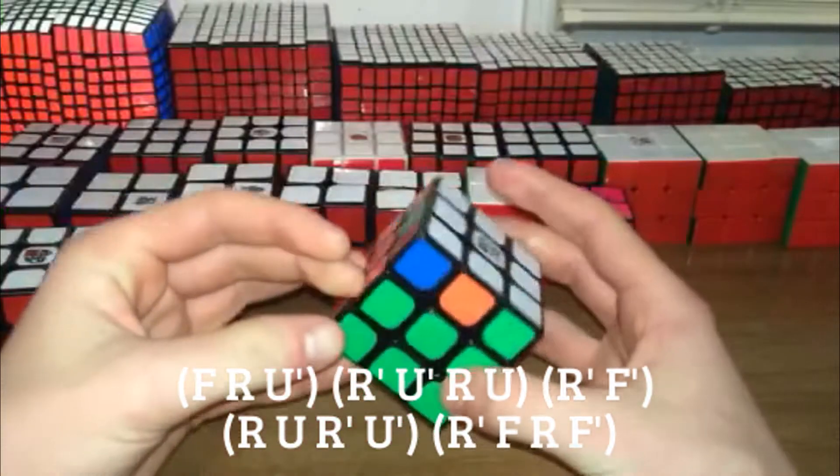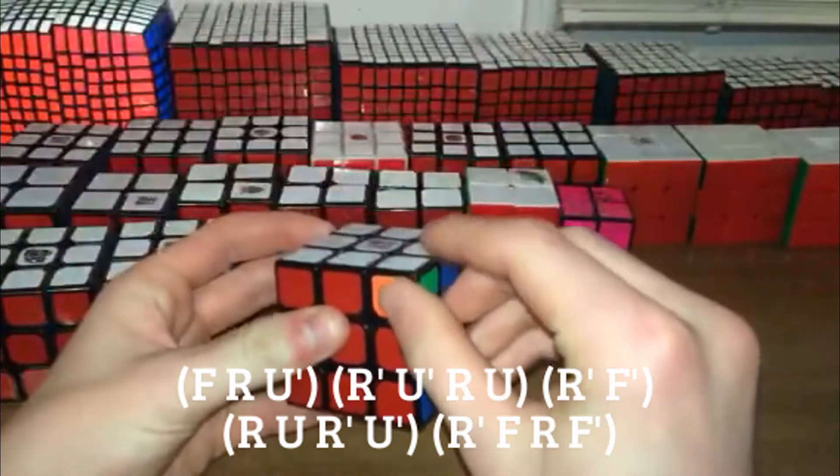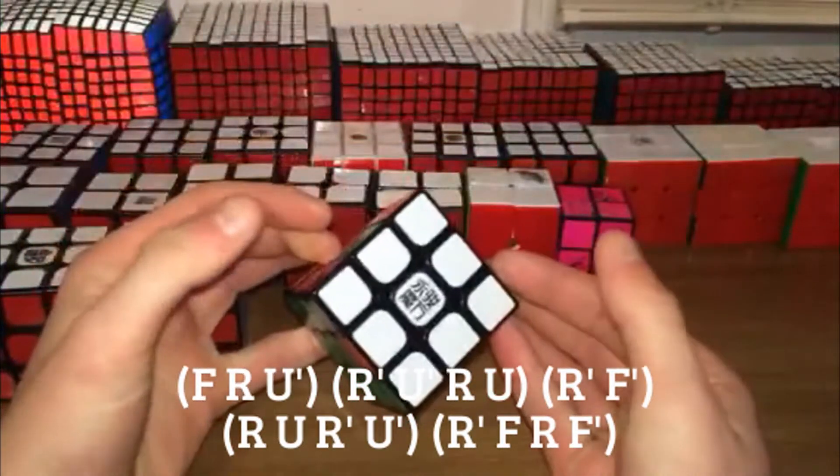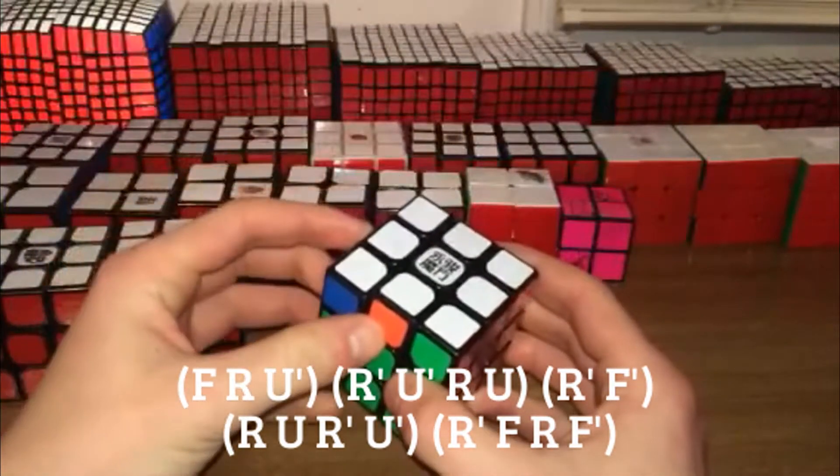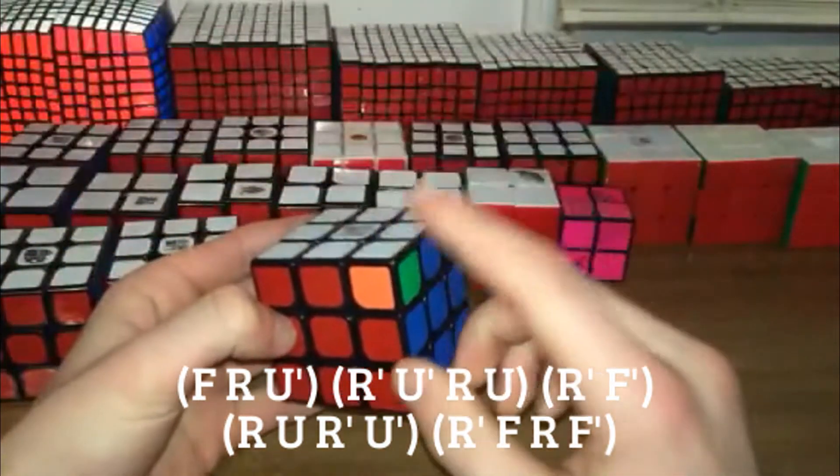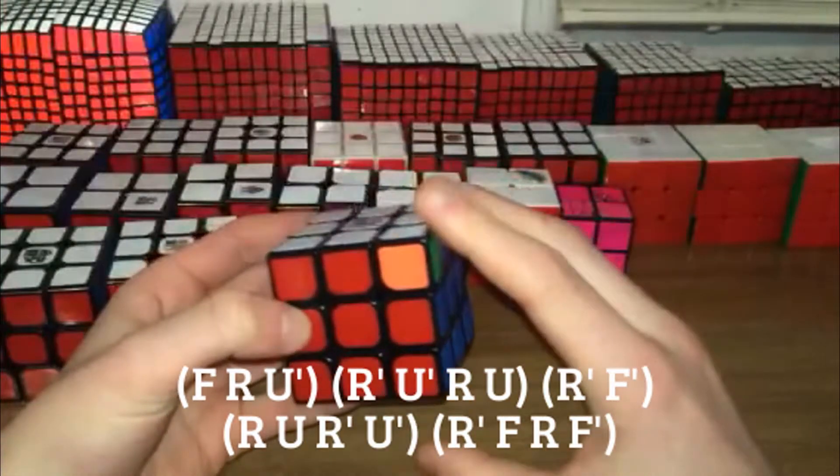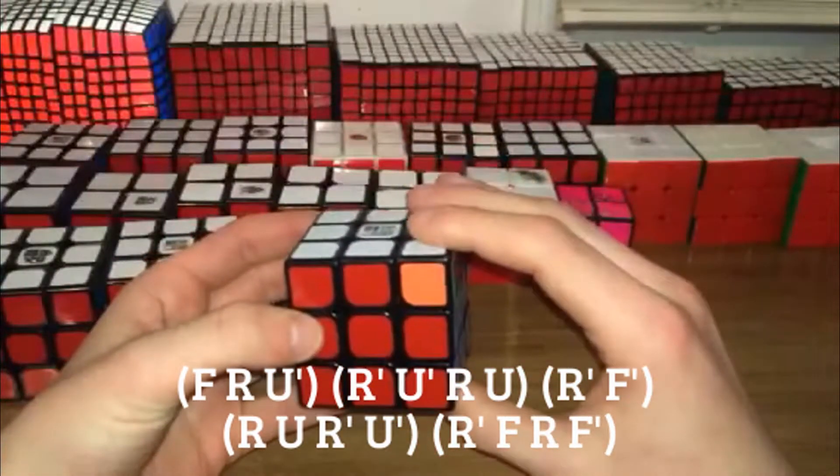You can easily see it with the lone corner right here. What it does is it switches these two corners and these two edges. You put the lone corner between these two blocks in the bottom right hand corner.